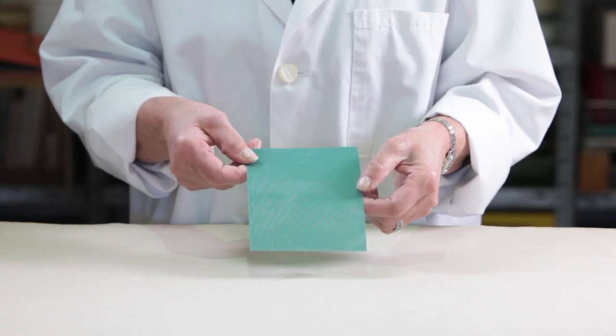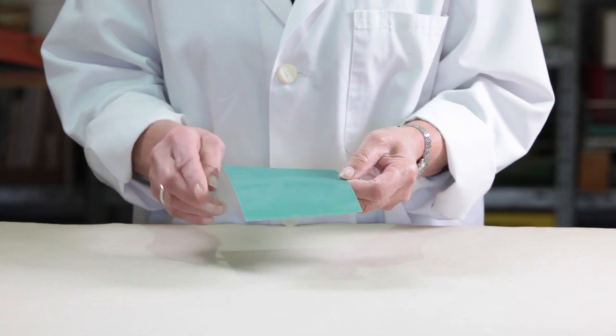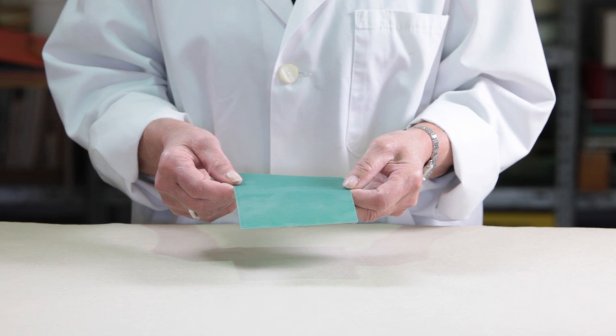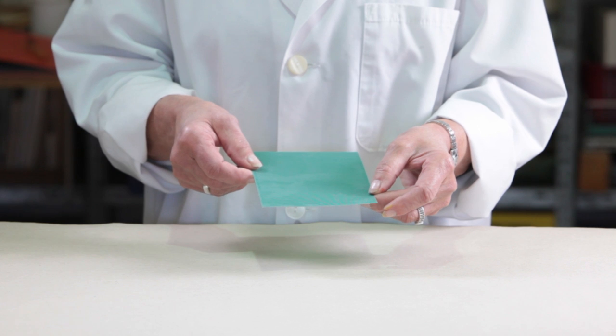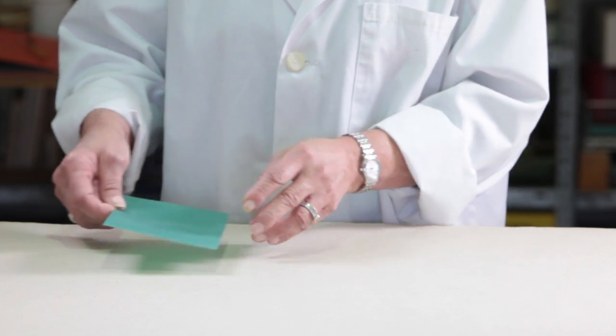Screen printing is easy with this special screen. You do not need a screen frame on hinges or liquid emulsion. This screen is already coated with a water-soluble UV-sensitive emulsion.